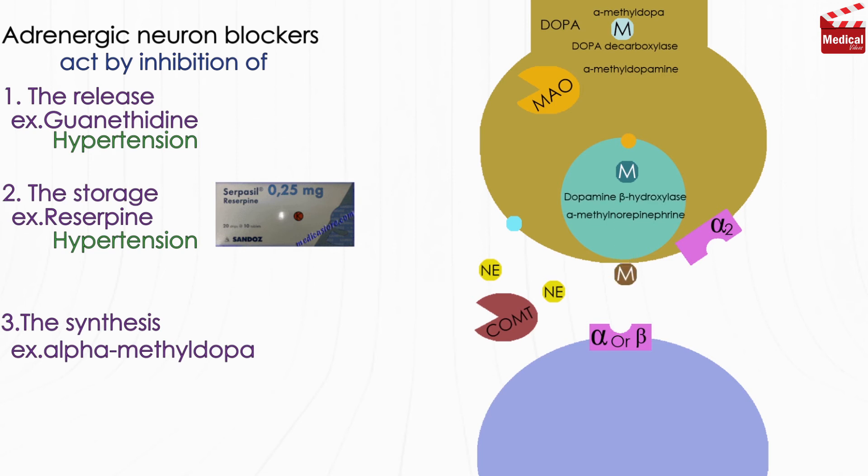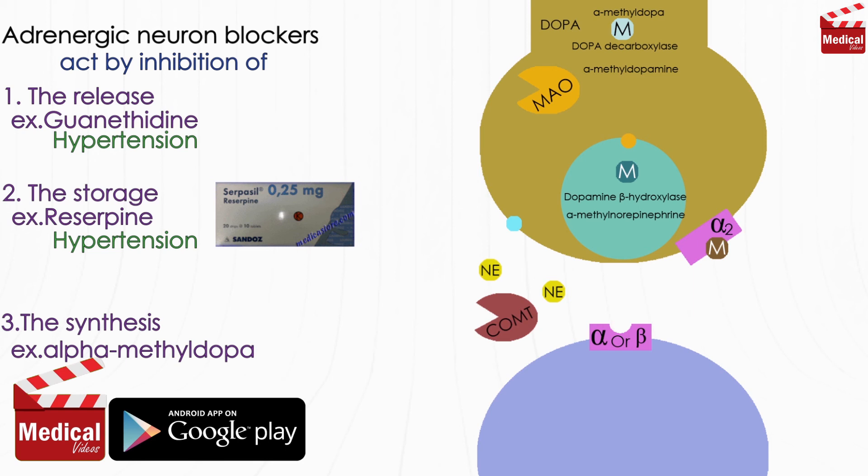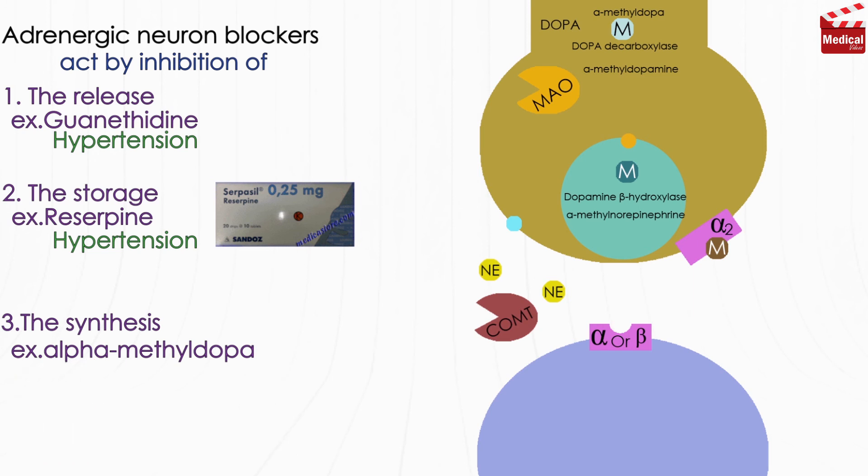Alpha-methyl norepinephrine is an agonist of presynaptic central nervous system alpha-2-adrenergic receptors. Activation of these receptors in the brainstem appears to inhibit sympathetic nervous system output and lower blood pressure. It is used in the treatment of hypertension.